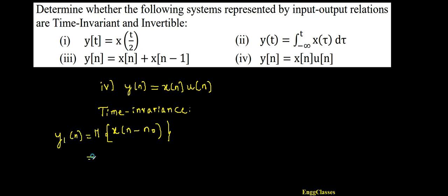So what is the nature of the system? Whatever input you give in as x(n), it multiplies that with u(n) and gets us the output. Therefore, this time the input is x(n minus n0) that gets multiplied with u(n). So this is y1(n). I would call this as equation number one.